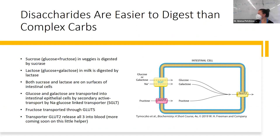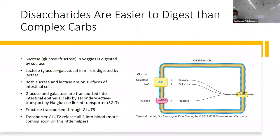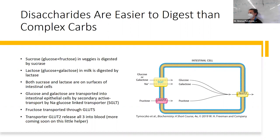Disaccharides are easier to digest than complex carbs — that seems obvious, right? We have specific enzymes that can digest our disaccharides down into monosaccharides. Conveniently, the enzymes are named similarly to what they break down: sucrose is broken down by sucrase, lactose by lactase. When in doubt, that's fabulous — we like things that have the same name.